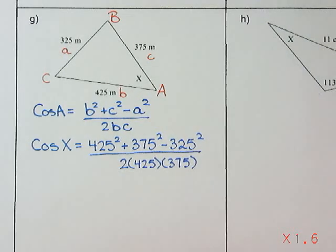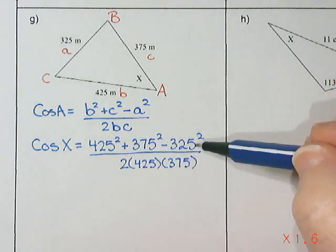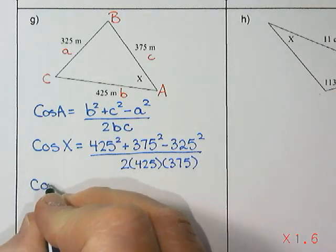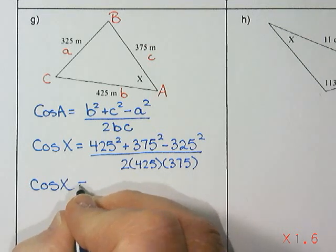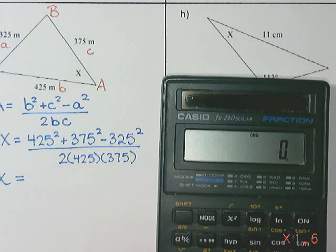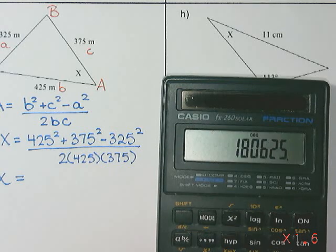Now, I recommend simplifying the numerator and then simplifying the denominator. So I am going to do 425 squared, plus 375 squared,